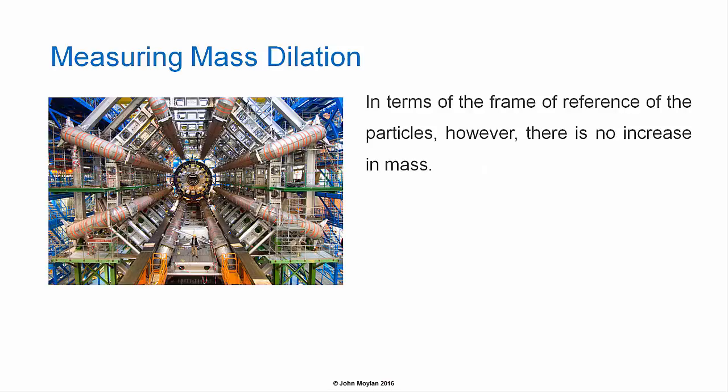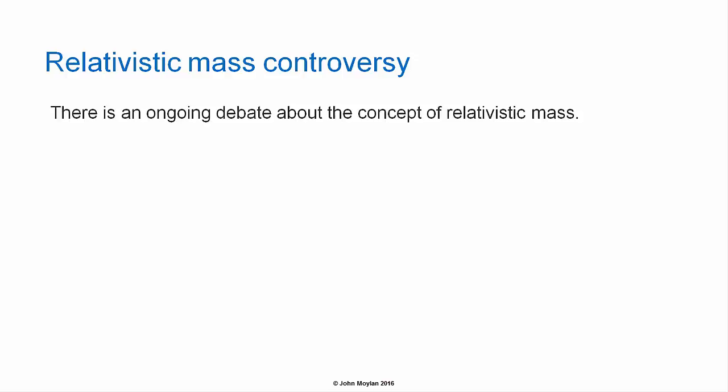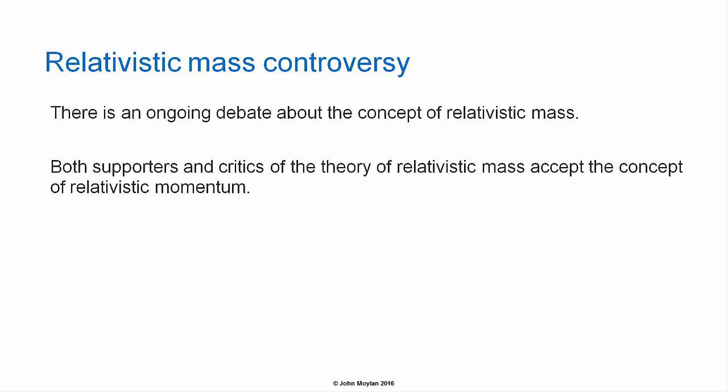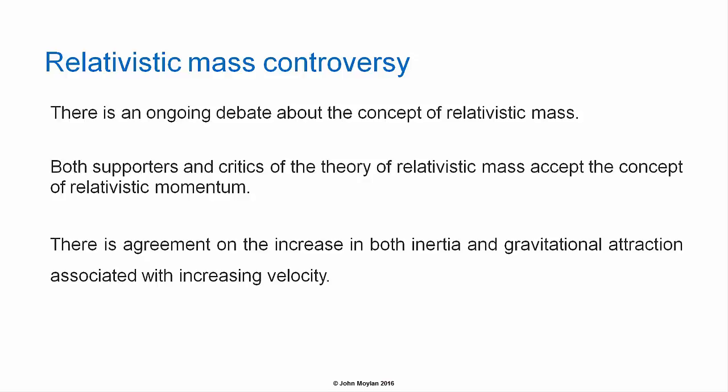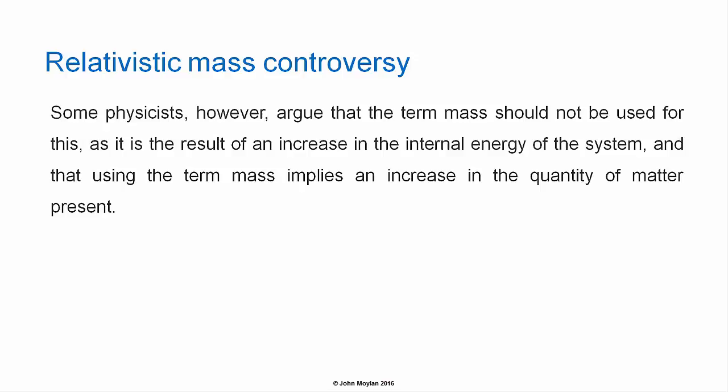One result of this is that the speed of light is a natural absolute speed limit, because as the speed of light is approached, the mass approaches infinity. In terms of the frame of reference of the particles, however, there is no increase in mass. There is an ongoing debate about the concept of relativistic mass — both supporters and critics accept relativistic momentum. There is agreement on the increase in inertia and gravitational attraction with increasing velocity, though some physicists argue the term 'mass' should not be used, as it implies an increase in the quantity of matter present.